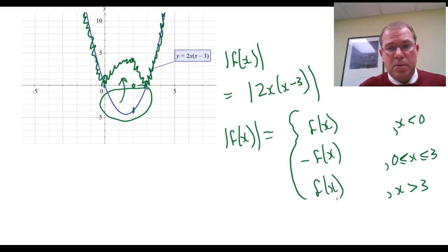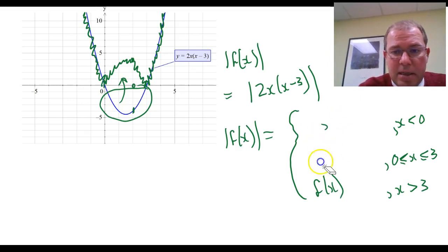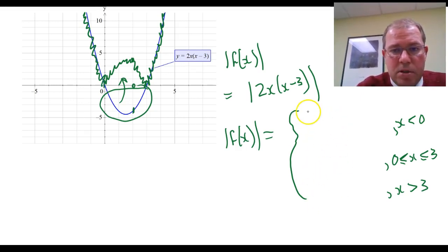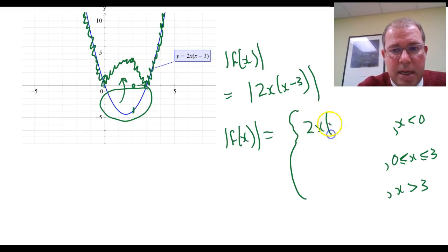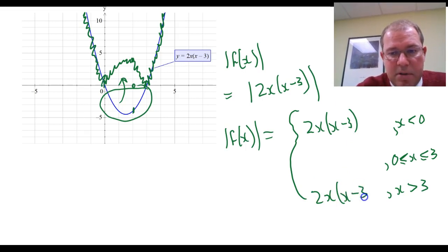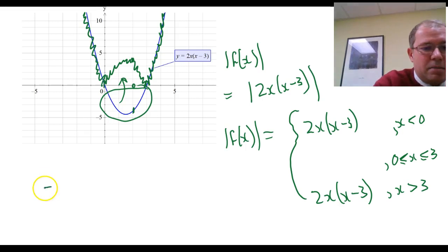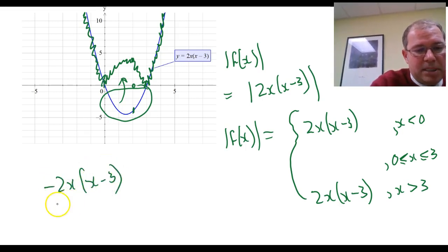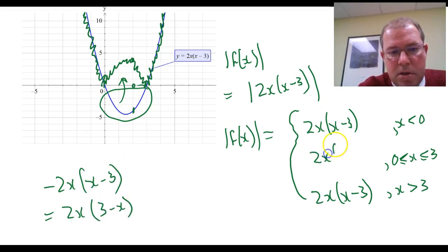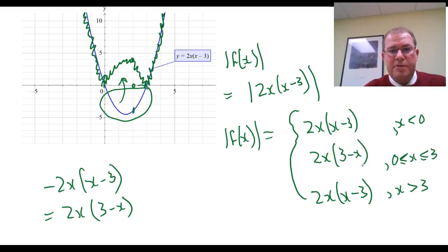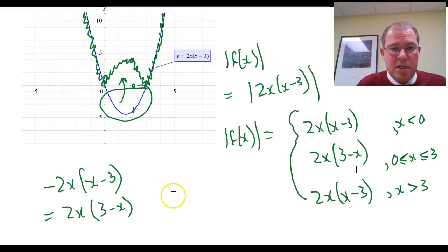So that's what it looks like as a piecewise function. We can put in the actual equations. It equals f of x, which is 2x(x minus 3), for x less than 0. For x greater than 3, it's also equal to f of x. But where the graph has negative y values, it gets reflected across the x-axis, giving minus 2x(x minus 3), which we can tidy up as 2x(3 minus x). So 2x(3 minus x) is the middle piece. And there we have the absolute value of f of x written as a piecewise function.